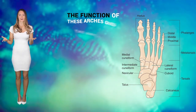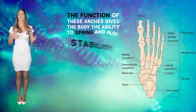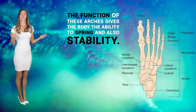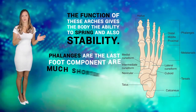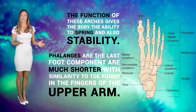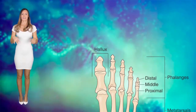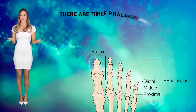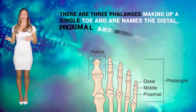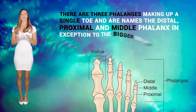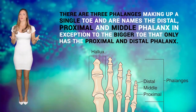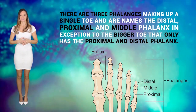The function of these arches gives the body the ability to spring and also provides stability. Phalanges are the last foot component and are much shorter. They articulate with the related metatarsals. There are three phalanges making up a single toe, named the distal, proximal, and middle phalanx. One exception is the bigger toe, which only has the proximal and distal phalanx.